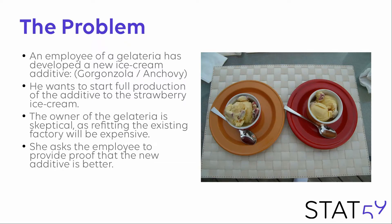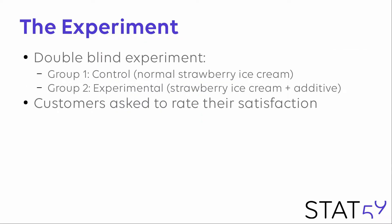I'd like to start full production of this strawberry ice cream with my additive. The owner of the gelateria is skeptical, as she thinks that refitting the existing factory is prohibitively expensive. So she asks me, the employee, to provide proof that the new additive is better. The experiment will be a double-blind experiment where customers are given either normal strawberry ice cream — the control group — or strawberry ice cream plus the gorgonzola anchovy additive in the experimental group. Customers will be asked to rate their satisfaction.